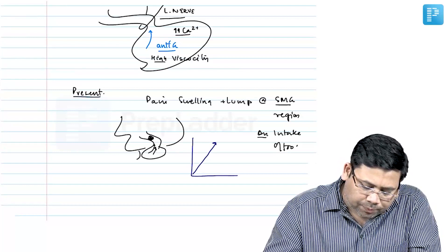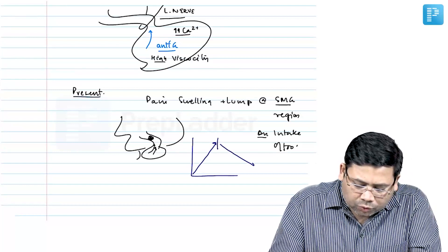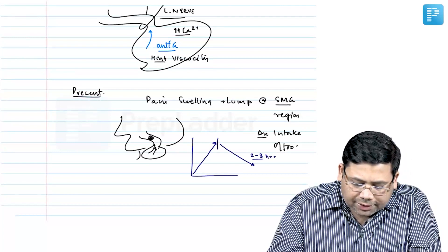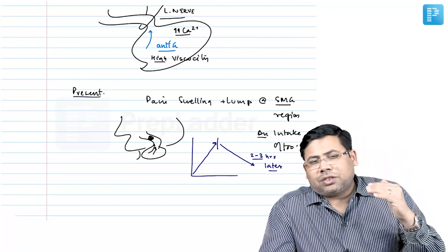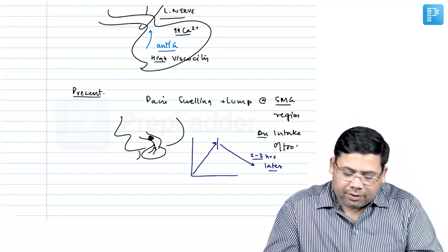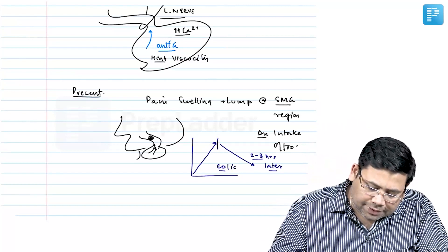Why is this known as salivary colic? Because this pain shoots up and then 2 to 3 hours later, it goes down. So pain which shoots up and comes back to baseline - this is known as colic, salivary colic.